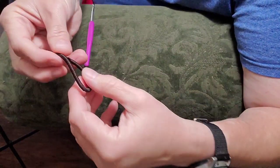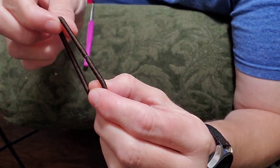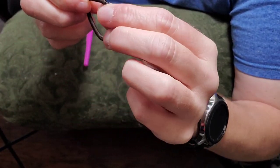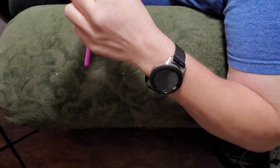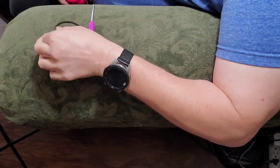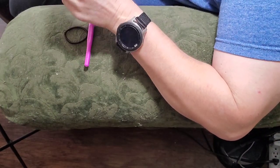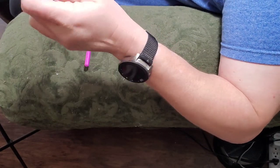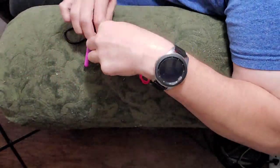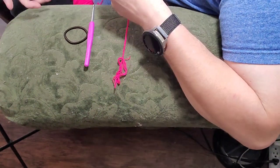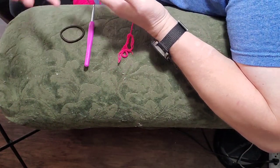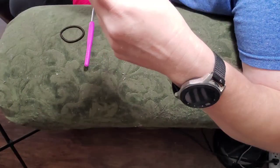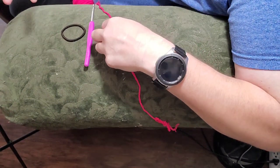So what you want, you obviously need the ponytail holder. The ones without the metal bands are best. And if you know how to do a magic ring, then you've got the first part. That's how you get started on it. It's real similar to doing the magic ring.